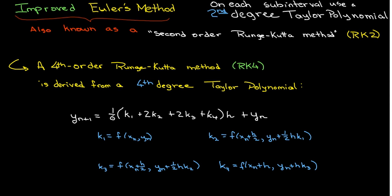So how do you evaluate this? Well, you have to calculate each of these k values in order. So you calculate k1 because you need k1 to calculate k2, and then you need k2 to calculate k3, and you need k3 to calculate k4.